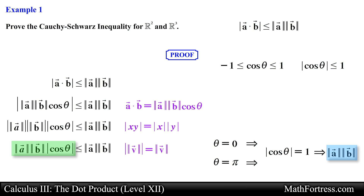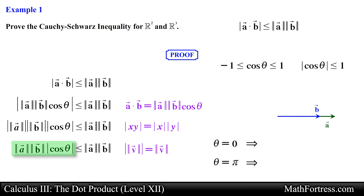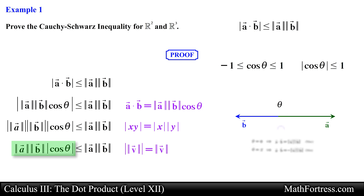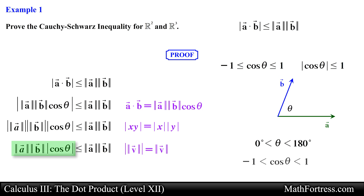The expression reduces to the magnitude of vector A times the magnitude of vector B. This makes sense since vector A and vector B are parallel and the dot product reduces to direct multiplication of the vector's magnitudes. These are the angles for which the dot product is a maximum when theta equals 0, and a minimum when theta equals pi. For the case when theta is between 0 and pi, the absolute value of cosine of theta will always be a number between 0 and 1, and when multiplied by the product of the magnitudes of vector A and vector B, it will produce a value less than that product.